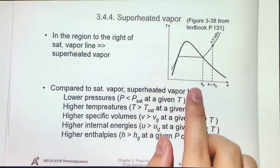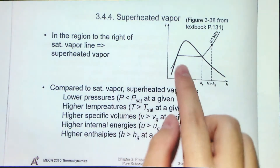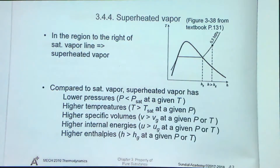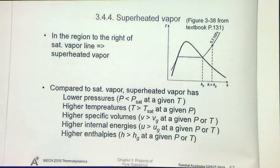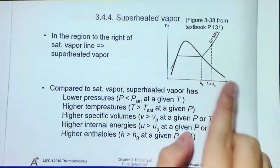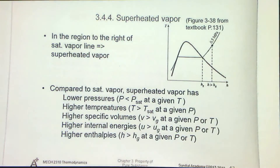We have the superheated vapor. As I've said in the previous sessions, in the region to the right of a saturated vapor line — that is, at the right of a saturation dome — we will have the superheated vapor.